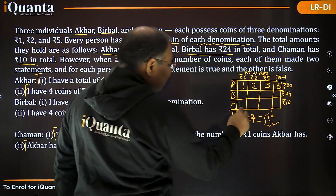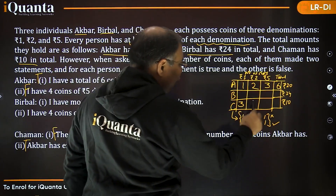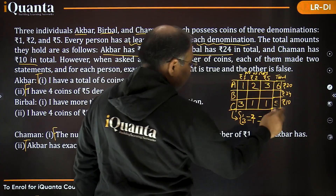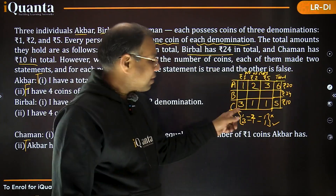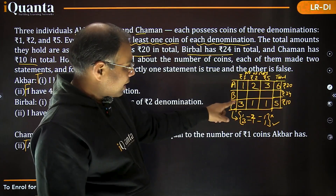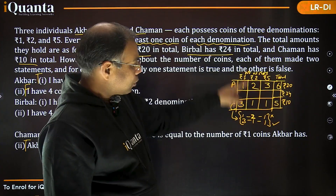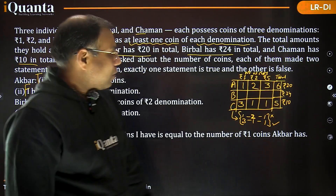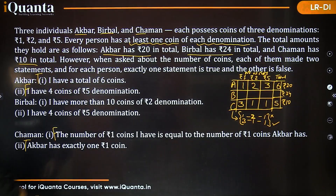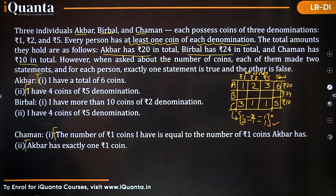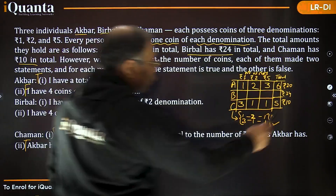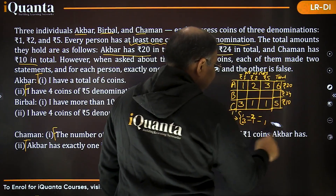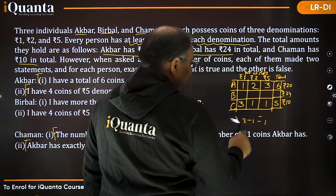Case 2 is certainly true: Chaman has 3×₹1, 1×₹2, 1×₹5. Let's verify: 3+2+5=₹10. Total coins = 5. Chaman is done.